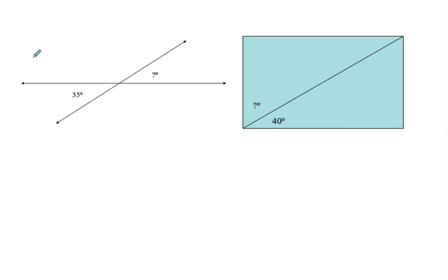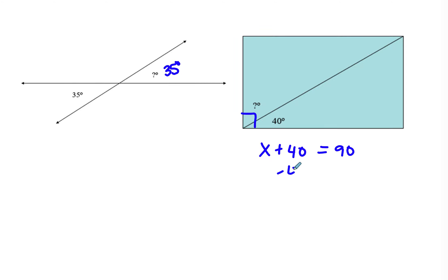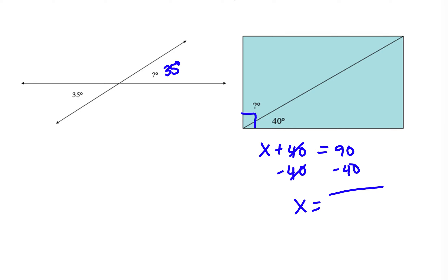Let's try the next two on your own — go ahead and pause the video. This one is going to be 35 degrees because they're vertical angles — across from each other made with the same two lines, so I don't need to set up an equation. Over here, this is in a rectangle, which tells me that angle is 90 degrees. So X plus 40 equals 90, and 90 minus 40 is 50. X equals 50 degrees.